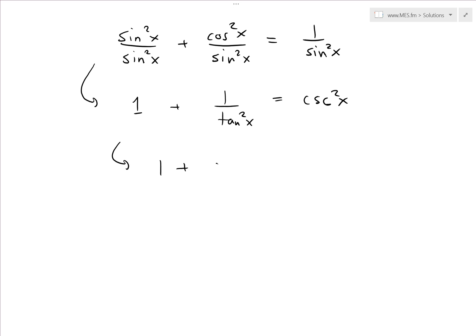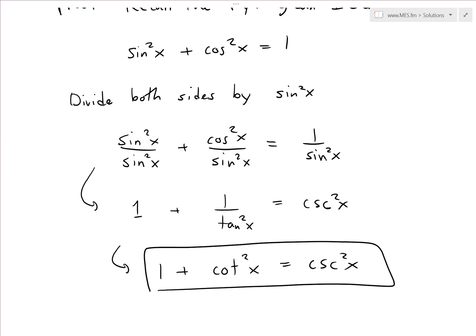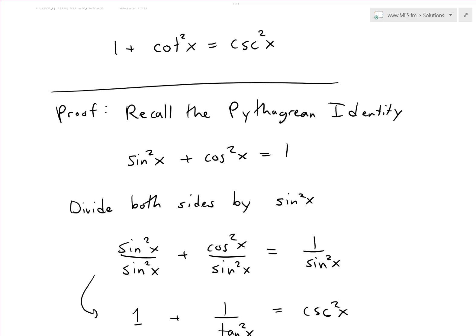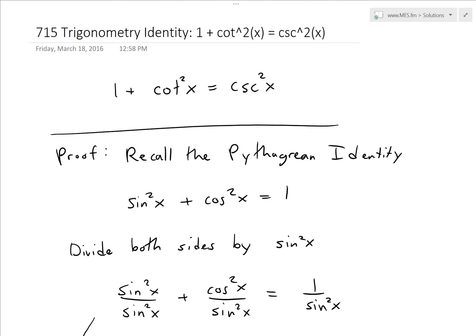So we get 1 + cot²x = csc²x, and there is the identity. It's basically just divide by sin²x and you get this identity right here.